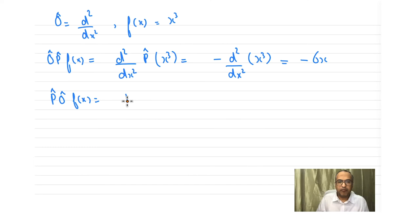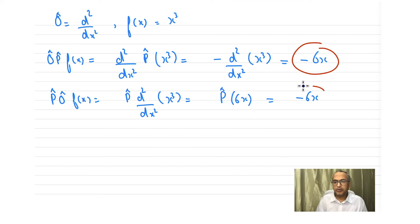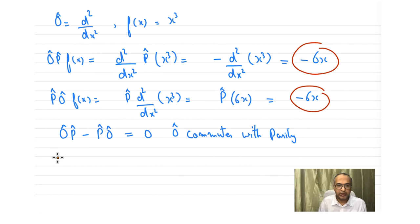Now calculating P·O: parity acting on d²/dx²(x³). The second derivative of x³ is 6x. Then applying parity replaces x with −x, giving −6x. Notice that both terms are the same: −6x = −6x. So O·P − P·O = 0, and we can say that d²/dx² commutes with parity. The first condition of the corollary is fulfilled.